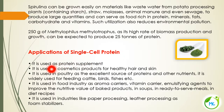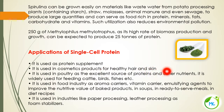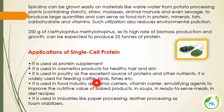Applications of single cell protein: SCP is used as a protein supplement and also as a cosmetic product for healthy hair and skin. It is used in poultry as an excellent source of proteins and other nutrients. It is used for feeding cattle, birds, fishes, etc. In the food industry it is used as an aroma carrier, vitamin carrier or emulsifying agent. It is also used in baked products, soups and diet recipes. Additionally, SCP is used in industries like paper processing and leather processing.